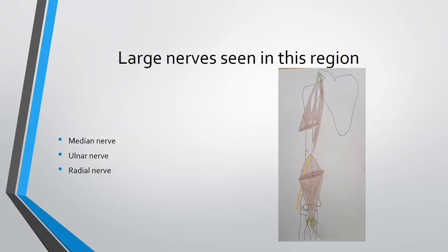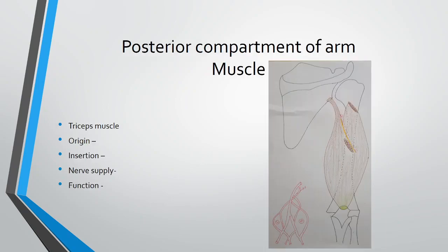Now, an important large nerve seen in this compartment: the median nerve. We can palpate behind the medial epicondyle of the humerus. The median nerve is seen in the front of the elbow. The ulnar nerve passes behind the medial epicondyle of the ulna, and the radial nerve passes behind the shaft of the radius. Ultimately, all three nerves arise from the brachial plexus and pass through into the forearm.